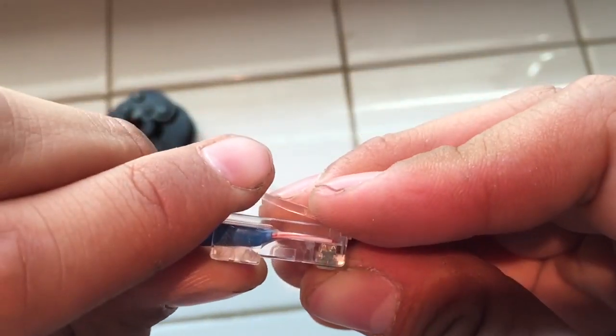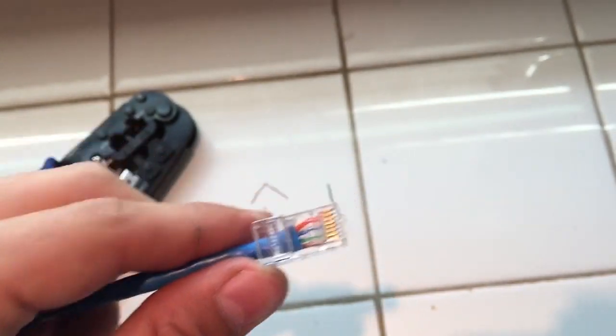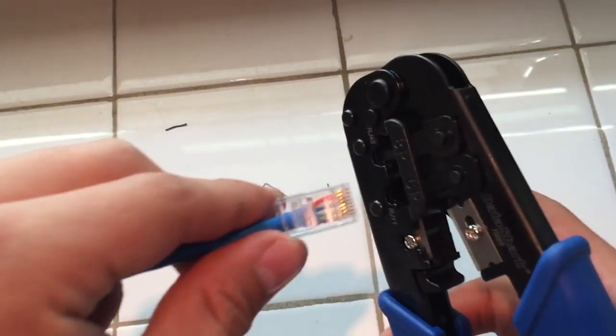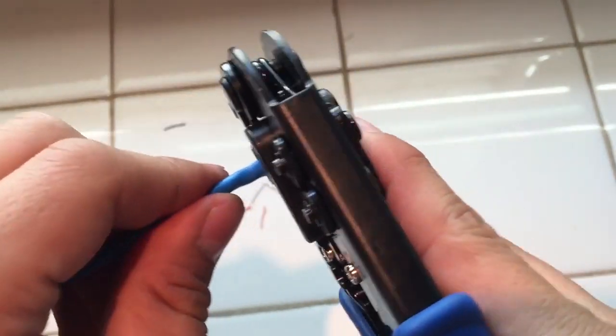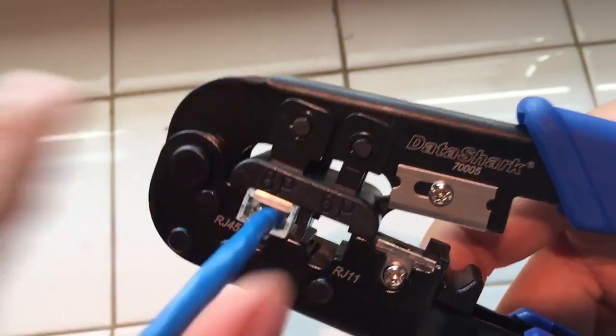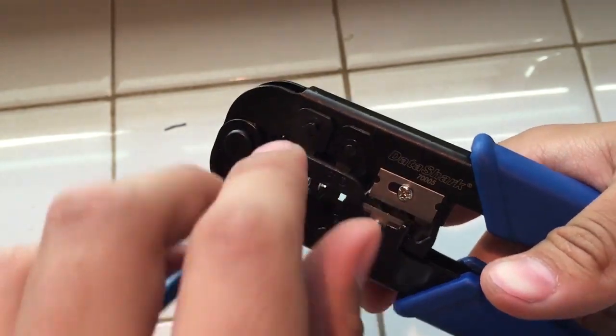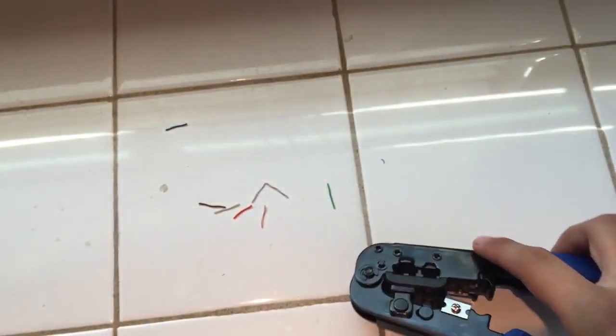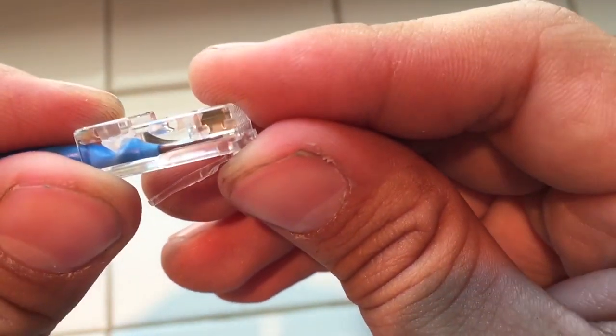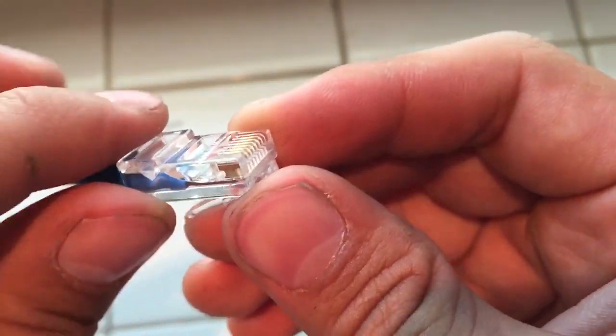Once it's securely in, grab your crimp tool and insert the jack into it. After it's in place, press down on the crimp tool. As you can see, now the wires are securely in place and the pins are making contact with the wire.